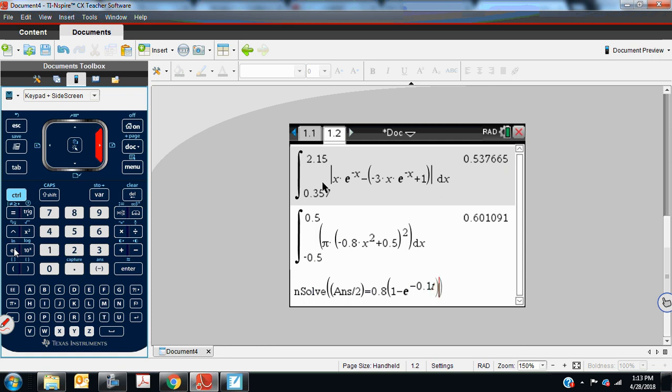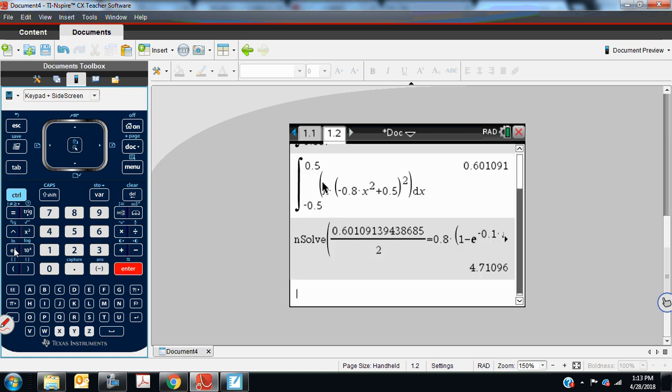And then at the end of the equation you've typed in, you must put comma t or comma x or whatever variable it is you're asking it to solve for. And hit enter. It's going to calculate the solution for t for us, which is 4.71.